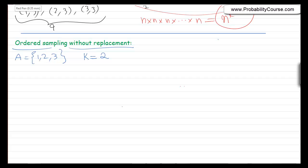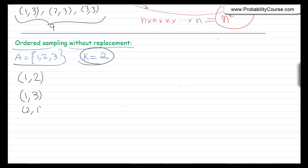How many different ways can I have a sample of size 2 from a set with three elements? Well, I might pick element 1 then 2, or 1 then 3, or 2 then 1, or 2 then 3, or 3 then 1, or 3 then 2. These are all possibilities, and as we see, there are six of them.